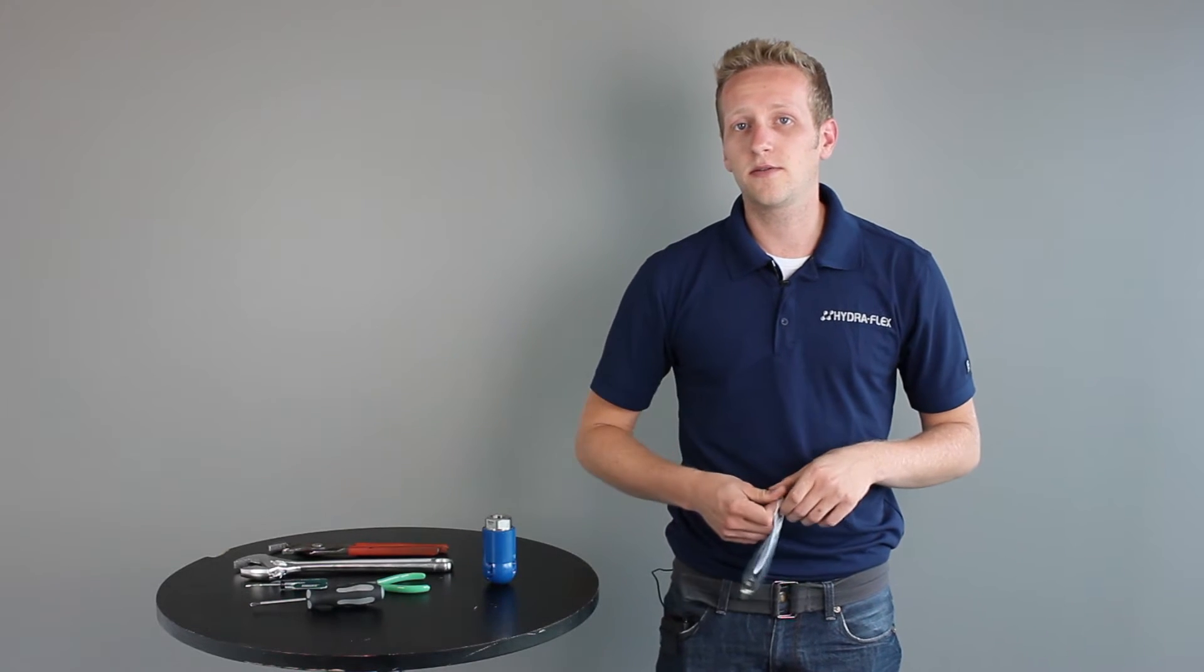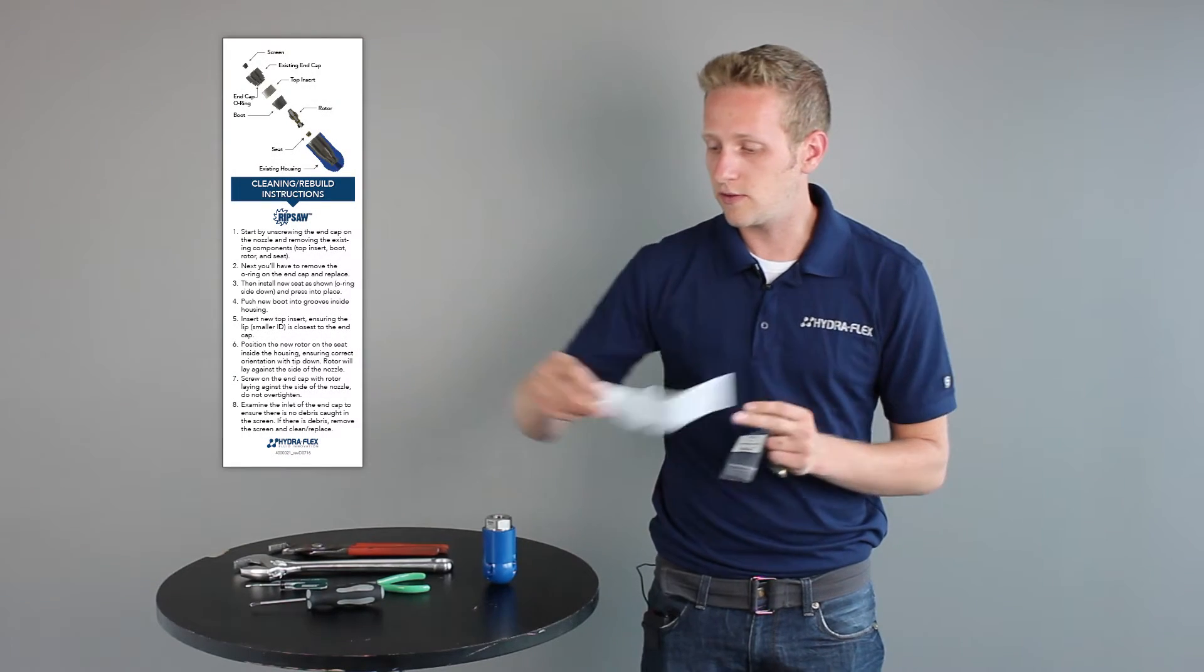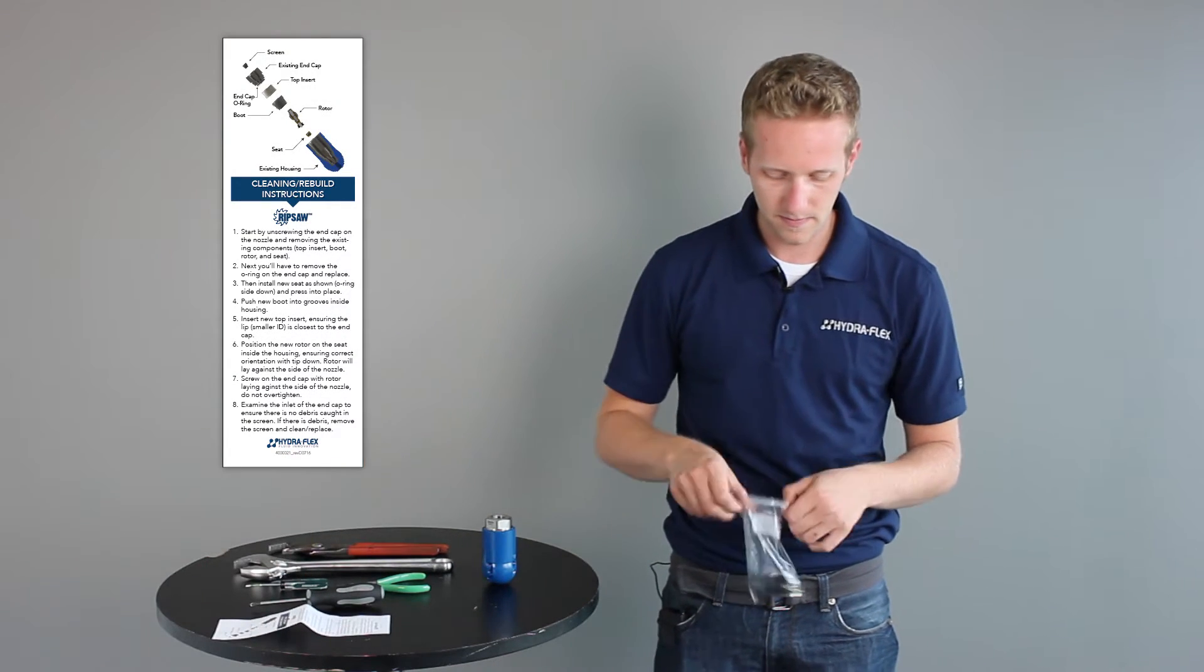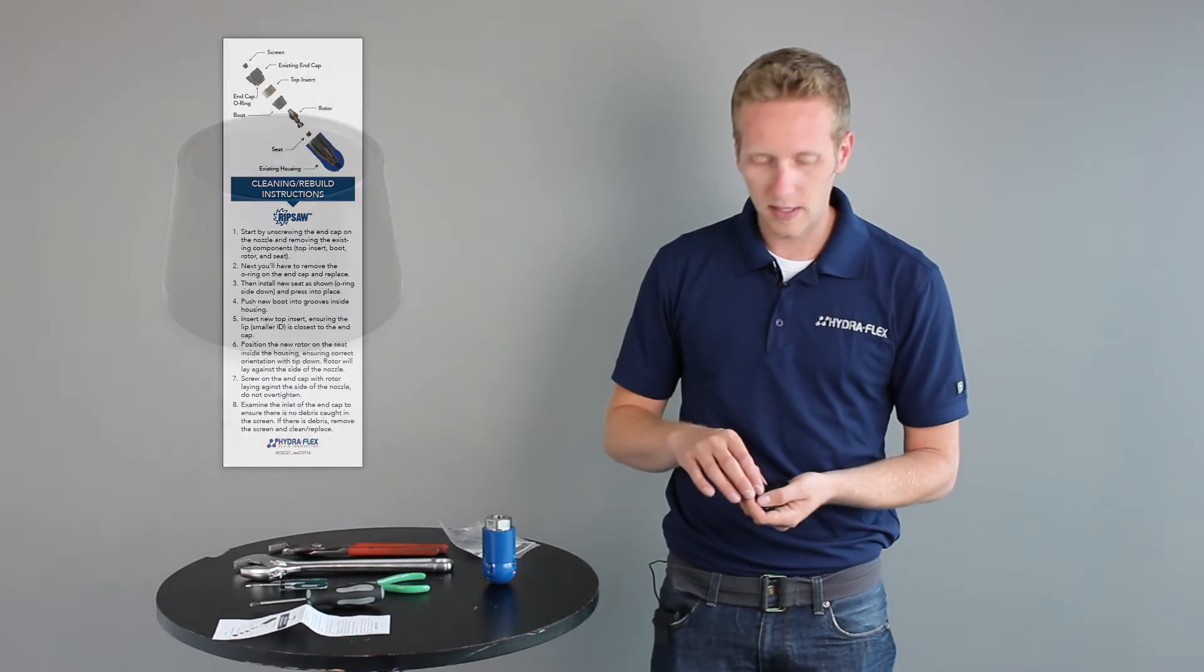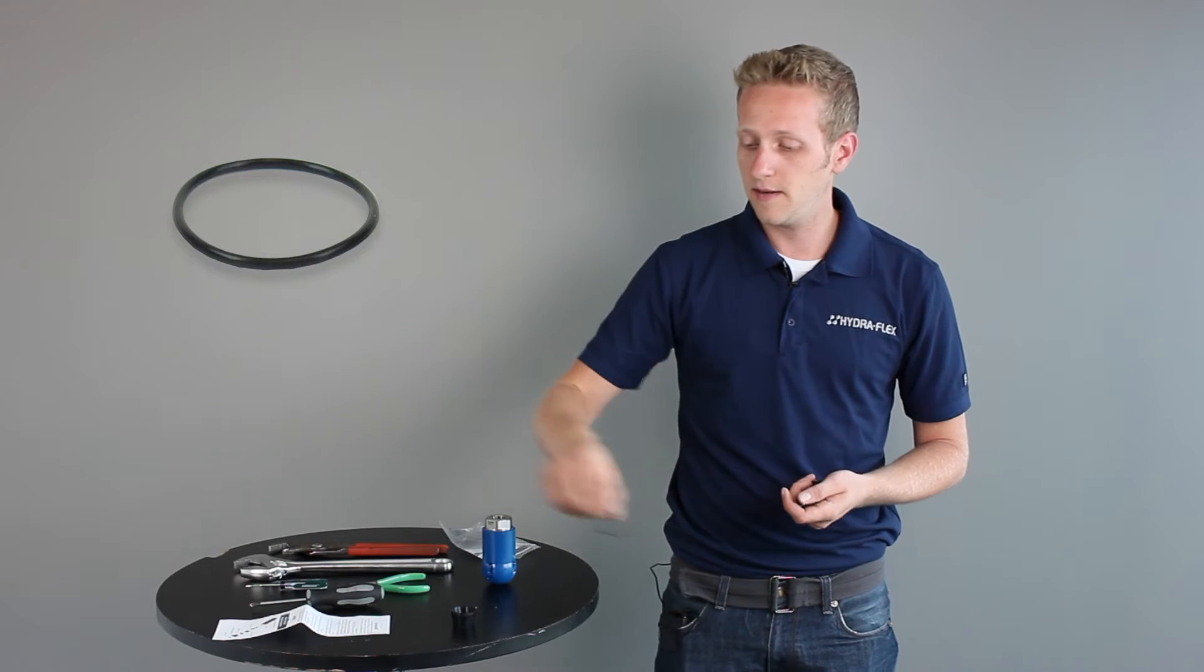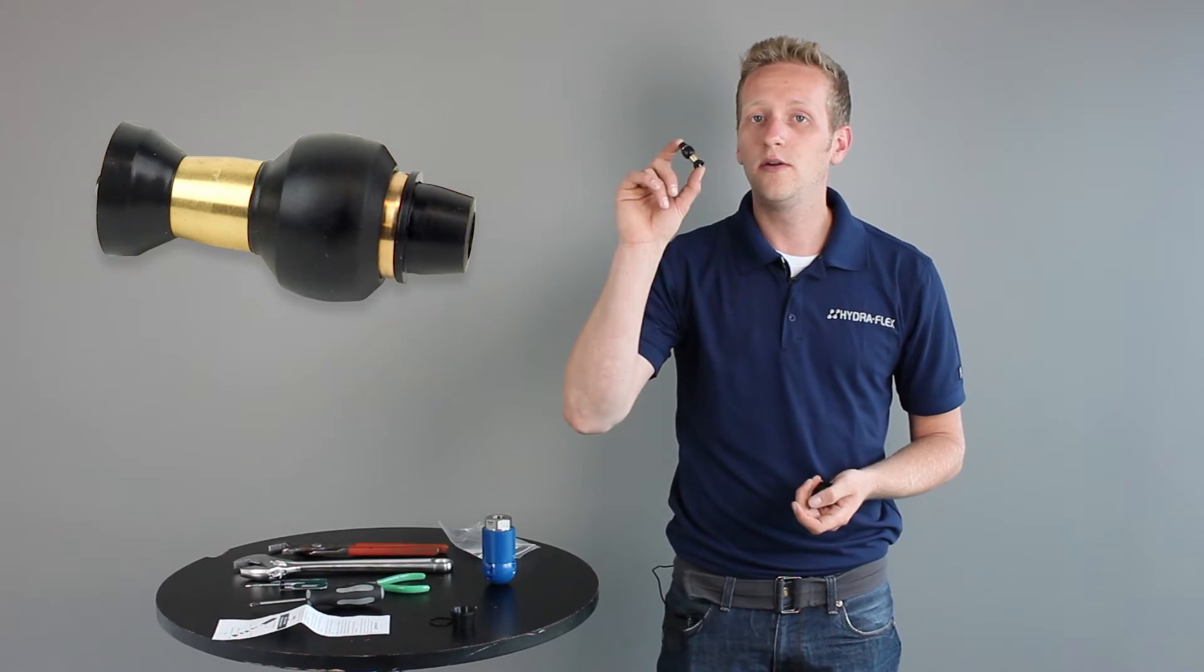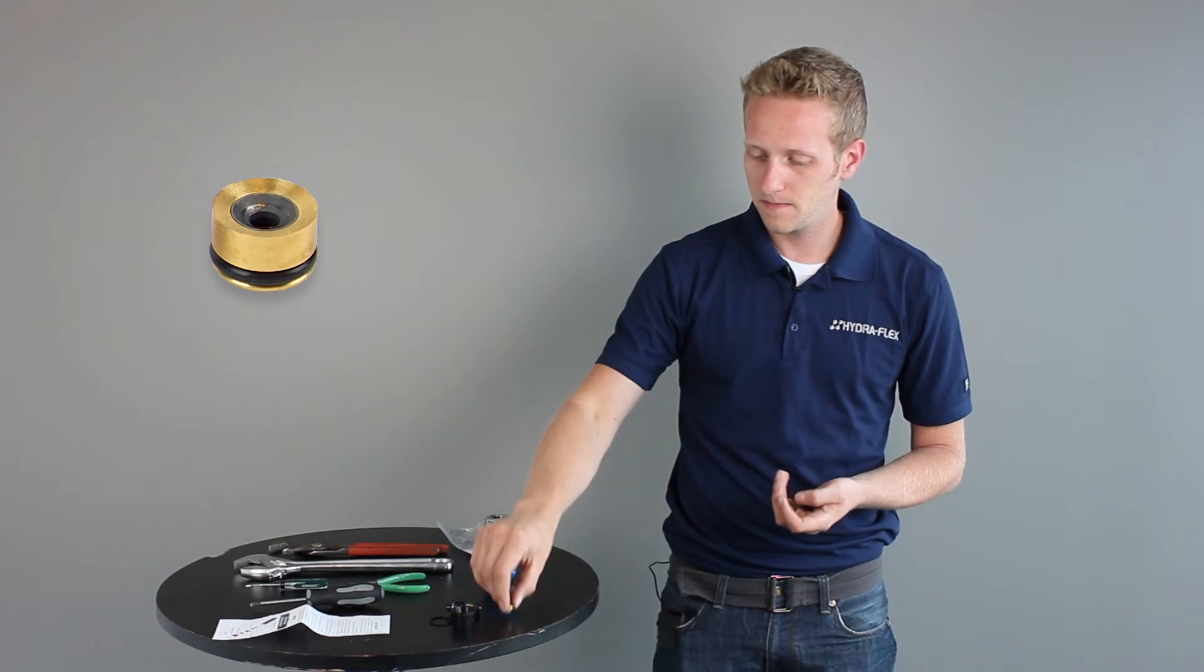Now I'm going to quickly take you through what will come inside your repair kit. You will be given a nice little instruction sheet telling you how to install this repair kit. You will be getting a new rubber boot, new o-ring for the end cap, a new rotor, a new seat, new dome screen, and a new top insert.